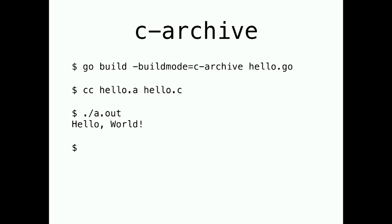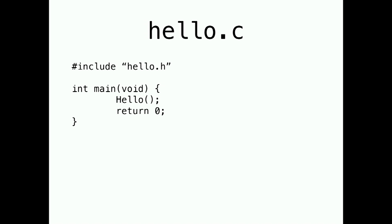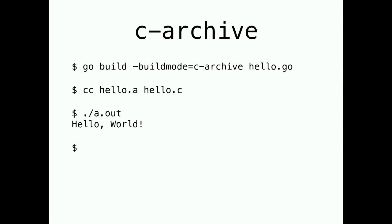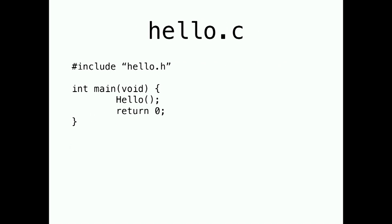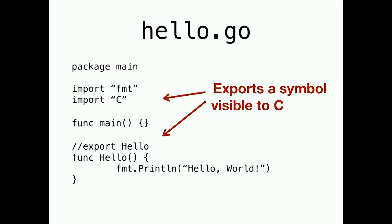Putting it together: we go build with buildmode=c-archive and produce hello.a and a hello.h header file. Then we call the C toolchain with the .a file and the .c file to produce a binary. When we run it, it says hello world — the C program's main called the Go hello function via fmt.Println. So we have C calling Go, all wrapped into a single executable a.out, created by an entirely different compiler toolchain than Go's.